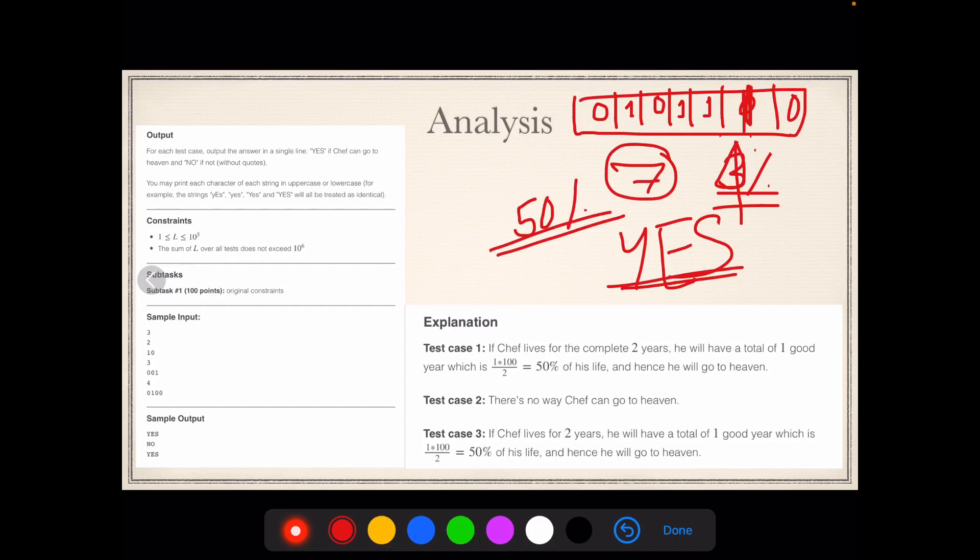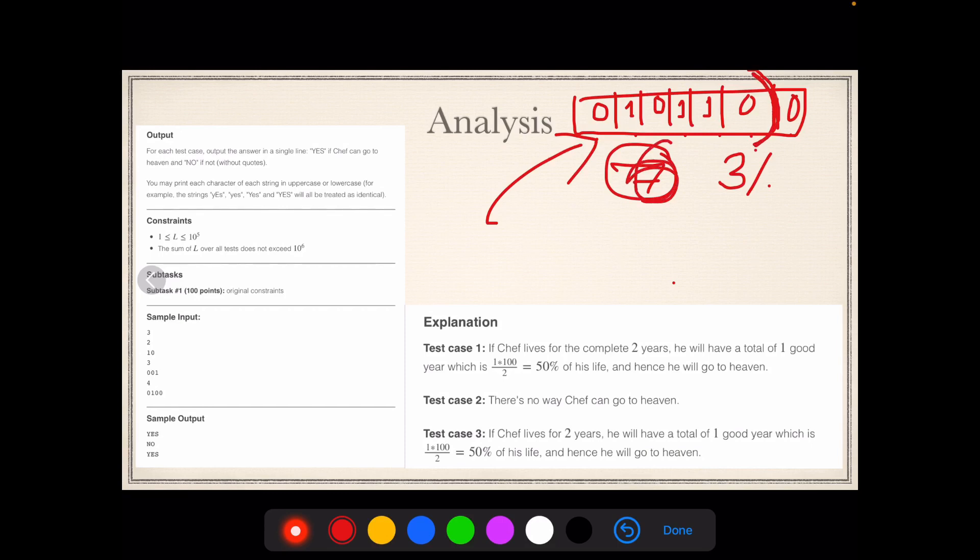If you see that in the total string you are not eligible for going into heaven, suppose this was zero, so with this current entire string of length L, I know that Chef won't be able to go to heaven. So what I do is I reduce the string first to L minus one, so let's see six.